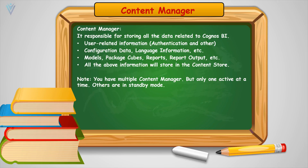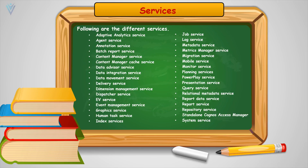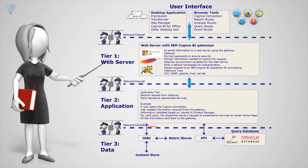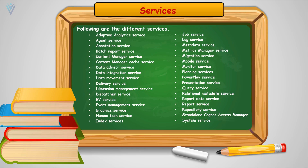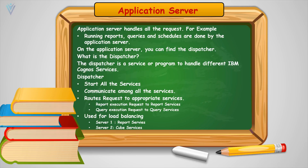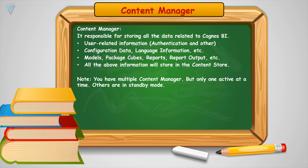On the application server you can also find the content manager. We have a content store database which stores all IBM Cognos services related data. Content manager handles requests between the content store database and the different services. For example, if I want to authenticate a user, the username and password is available in the content store, and content manager fetches that data for validation. Content store also holds configuration data such as language preferences, theme settings, model packages, cubes, reports, and report output.